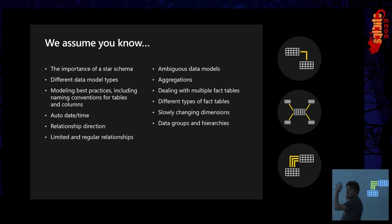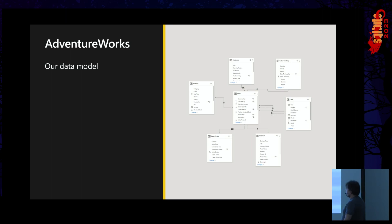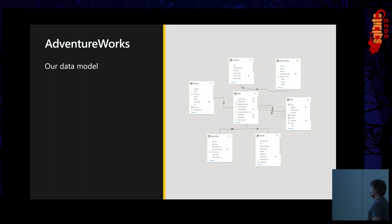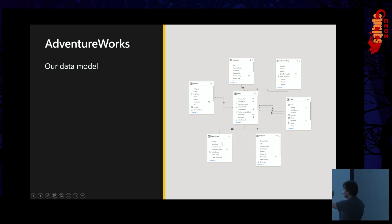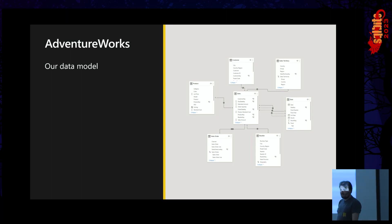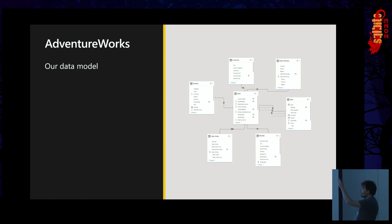Our demo data model is a straightforward star schema — one fact table, multiple dimension tables. There's a role-playing dimension, one-to-many relationships, and actually two fact tables: sales and orders. When we say orders and sales in the demos, you'll know they are related, as is the product dimension.